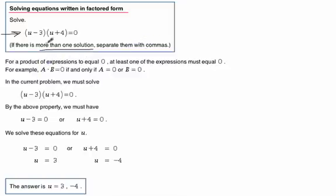The first thing to recognize is that we have two things multiplied together to equal zero. This parenthesis (u - 3) is one term or entity, and the other is this quantity (u + 4).